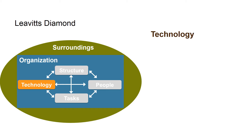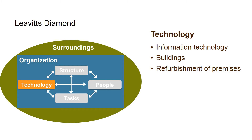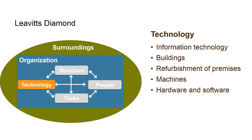Technology goes beyond information technology. It also includes buildings, refurbishment of premises, the machines that are in the organization, and the associated workflows. You could say that it is about both hardware and software, as it also deals with IT programs, which today are everywhere.